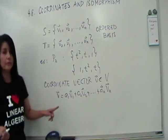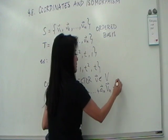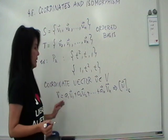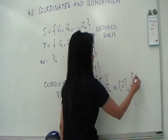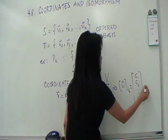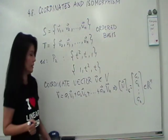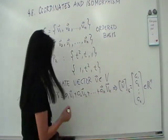The definition of coordinate vector is that, and we denote it by this symbol, coordinate vector of V with respect to S is nothing but the n by 1 vector a1, a2, down to a sub n. So notice this is an element of R upper n. So that's the coordinate vector of V with respect to the ordered basis S.